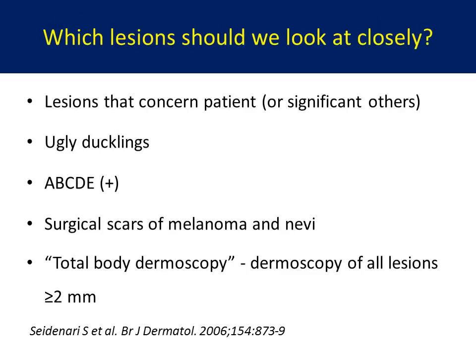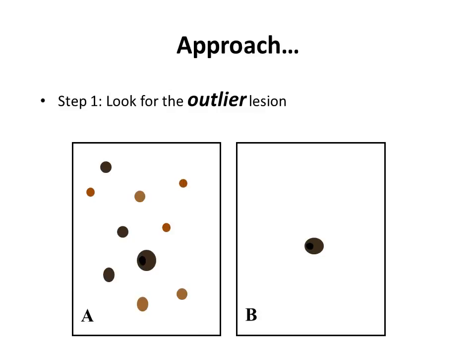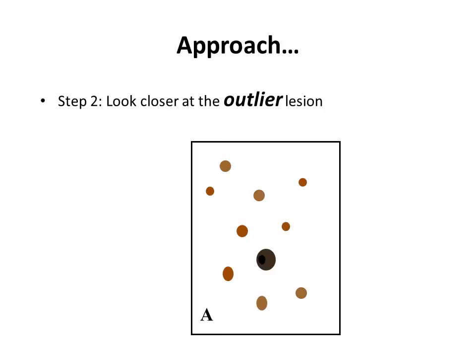So which lesions should we look at closely? Any lesion that concerns the patient or significant others on history. Any ugly duckling — meaning a lesion that deviates from the other patient's lesions. Lesions that fulfill any of the ABCD criteria: asymmetry, border irregularity, color variation, diameter, and evolution meaning change. We should look at surgical scars of previous melanomas and nevus excisions. Some colleagues also advocate looking randomly at multiple lesions across almost the whole body with dermoscopy — called total body dermoscopy. We need to be sensitive in picking up any outliers based on history or examination, then look closely at these outliers clinically and dermoscopically, and they may become much more obvious melanomas.